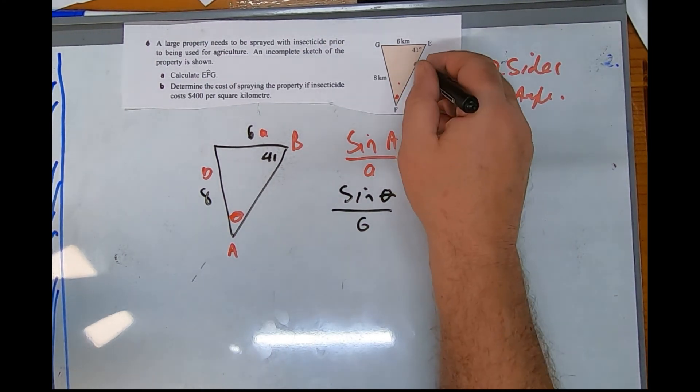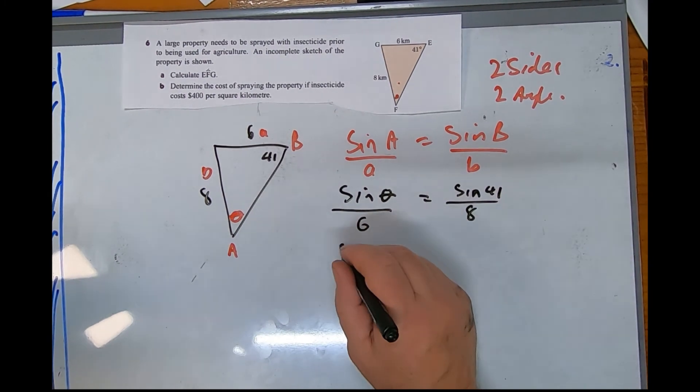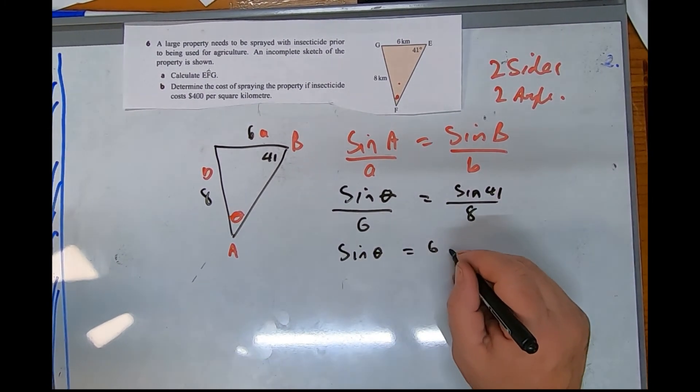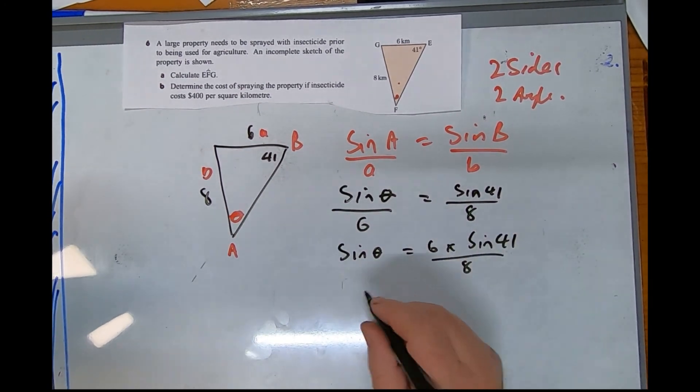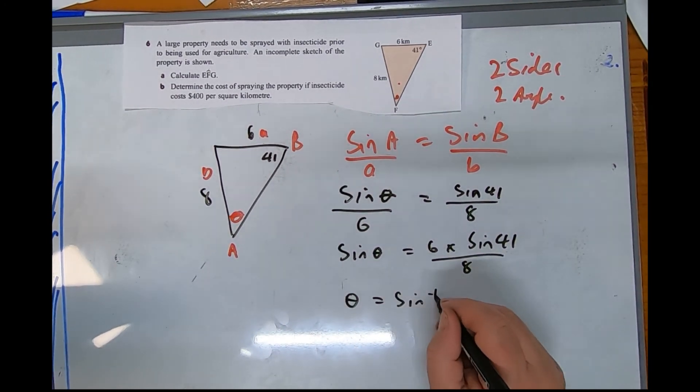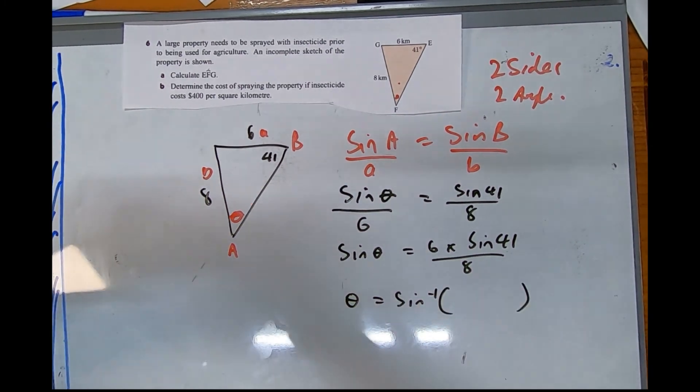Over opposite side eight. So we get the sine by itself by multiplying the six across over eight. So we're going to shift sine of this number. Let's work out what the number is.